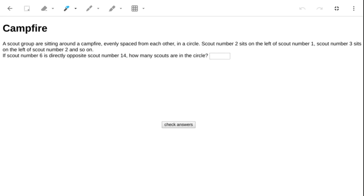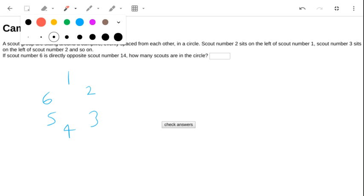Right, let's think about what if there were six scouts. They'd sit in a little circle like this, and one would be opposite four.